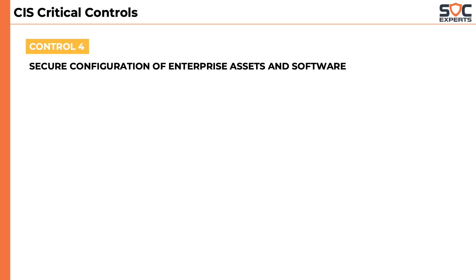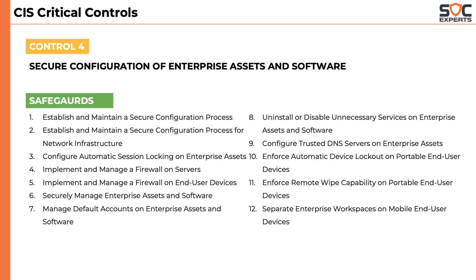The fourth control is about secure configuration of hardware and software. It has 12 safeguards that stress on establishing and maintaining secure configuration processes for network devices, software, servers, firewalls, end-user devices, etc. It also talks about hardening the operating systems by disabling unnecessary services and ports.